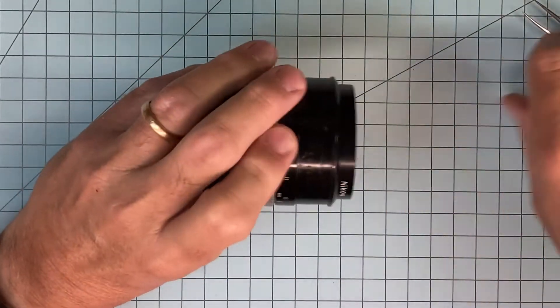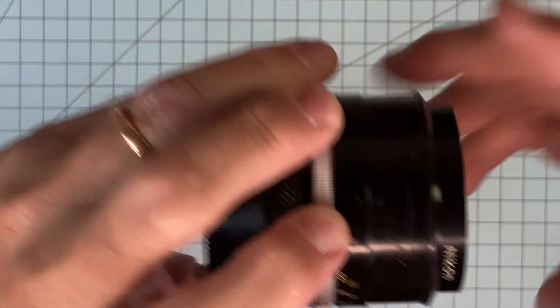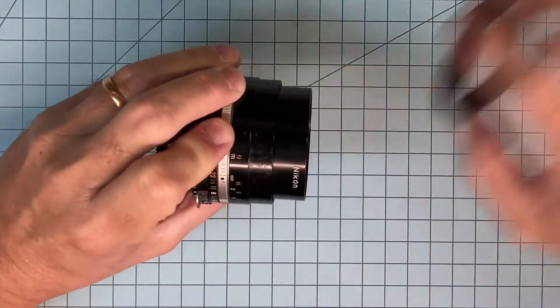Next ring is this ring right here. You can see the brake mark in it right there. I'm going to twist that off, that comes out.